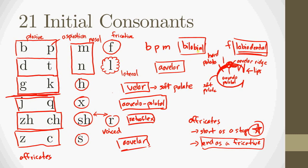So going through them again: we have bilabial, labiodental, alveolar, velar which is the soft palate, alveolopalatal which is between the alveolar ridge and palatal region, retroflex which is the tongue curling back, and then alveolar again. In terms of modes of articulation we have plosive — with unaspirated and aspirated versions — and that goes for the affricates as well. We have nasal in two versions: bilabial and alveolar. We have many fricatives, and then one lateral. That basically breaks down all 21 consonants. A lot of these details aren't necessarily important to actively think about when speaking Chinese, but it's good to be familiar with them to make sure you're using your mouth properly.